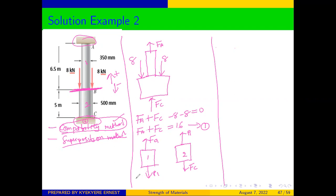Looking at section one, we can write that FA minus D1 equals zero, so FA equals D1. For section two, we can see that FC is going up, and from equilibrium D1 plus FC equals the applied load, giving us D1 equal to negative FC.